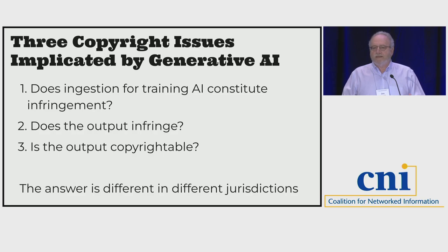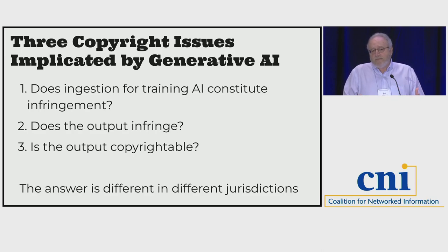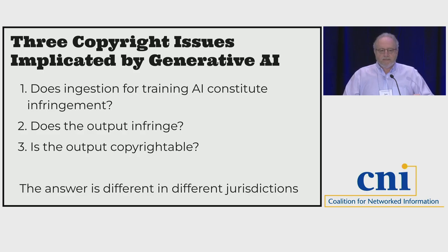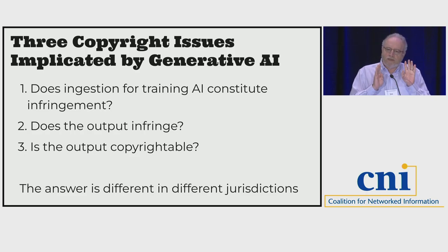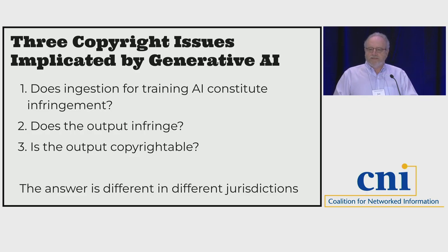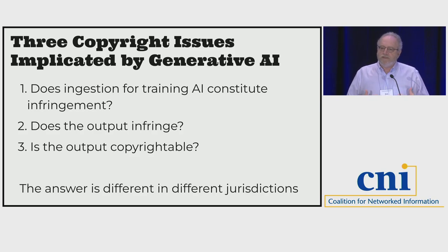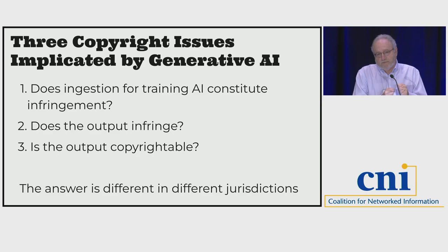That's where things get confusing. If you could just talk about one issue at a time, it's manageable, but when you get these three issues mixed together—even reading reputable magazines and newspapers—they slide from one issue to the other. As a copyright lawyer, I notice we're switching topics, but for a lot of readers it's really confusing. If you get nothing else out of this presentation, understand this: there are really three different issues implicated by artificial intelligence. This is true with all AI, but particularly generative AI.